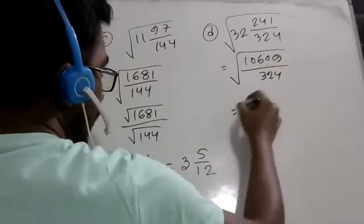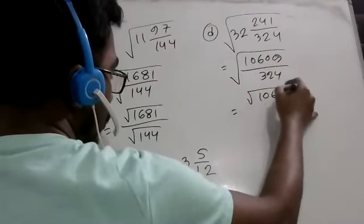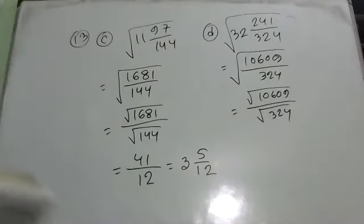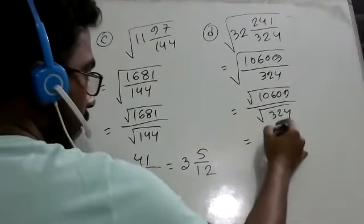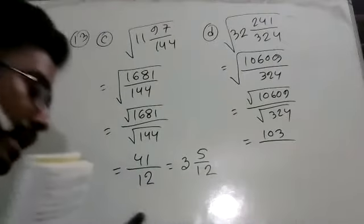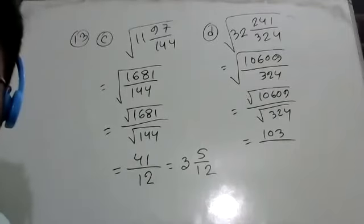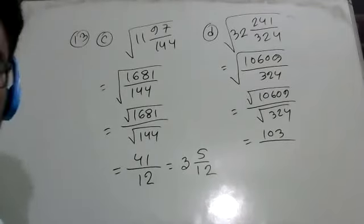I'm taking the individual root for the numerator and denominator separately. We're going to create a root for each. The result is 103 over 18, which equals 5 and 13/18.